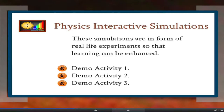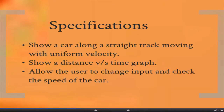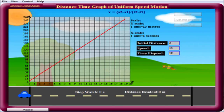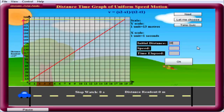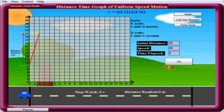Let me introduce the simulations with the first demo. From the mechanics section, we are showing how uniform motion is created. The specifications for this activity are: show a car along a straight track moving with uniform velocity, show a distance versus time graph, and allow the user to change the input and check the speed of the car. The initial distance is 10, the speed is 10, and the time lapse is 2 seconds. The graph is plotted and the graph line starts from position 10, which is the initial position of the car.